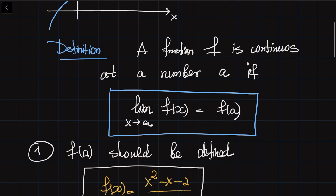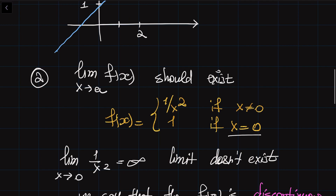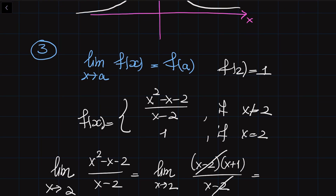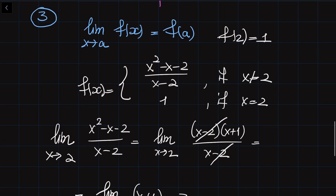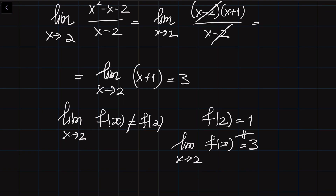So to summarize: a continuous function means the function should be defined at the point, its limit should exist, and its limit should be equal to the value of the function at that point. In an interval, the function is continuous if it is continuous at all points inside the interval. Thank you very much for your attention. I hope this video was helpful.